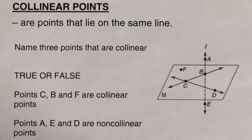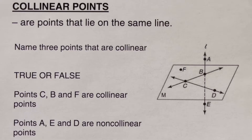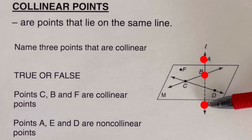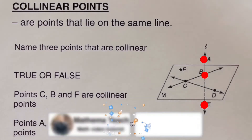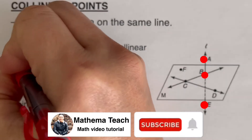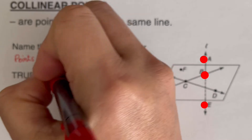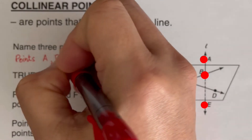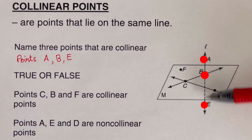We need three collinear points. We know that c and d are collinear, but we need three of them. Looking at the vertical line, we can say that points a, b, and e are sitting on the same line l. So the three points that are collinear are points a, b, and e.